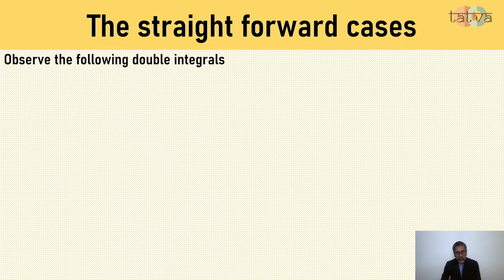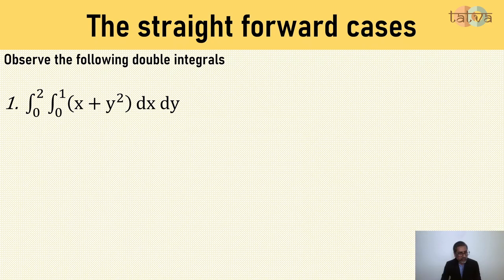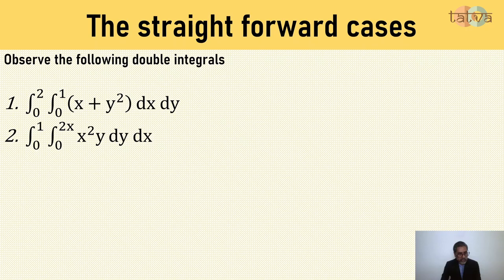First let us look at the straightforward cases where no polar coordinates will be required. Let us observe the following double integrals. The first problem: integral 0 to 2, integral 0 to 1, x plus y squared dx dy. If you look at these limits, they would suggest that the region is a rectangle with x limits from 0 to 1, y limits from 0 to 2. So we do not need any polar transformations for this problem.